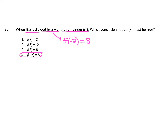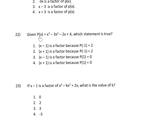Number 22: given p(x), which statement is true? Looking at the choices — some say 'is a factor' — we know that for something to be a factor, when we plug in a number, the expression must equal 0. So it automatically has to be choice 3 or 4. Choice 3 says x minus 1 is a factor because p(1) = 0, and choice 4 says x plus 1 is a factor because p(1) = 0. If you plug in positive 1, that would tell us x minus 1 is a factor — the divisor must have the opposite sign of what we're substituting. So choice 3 is the answer.